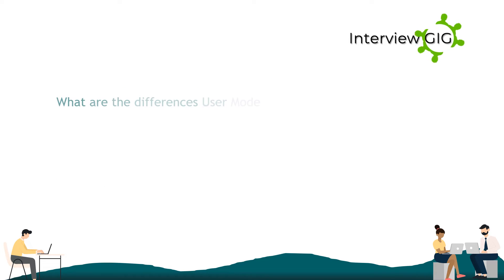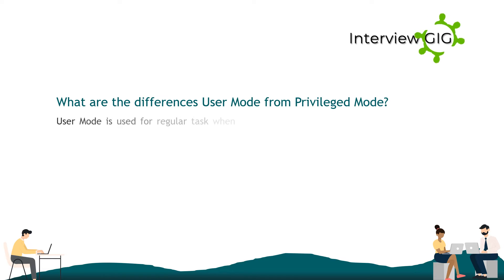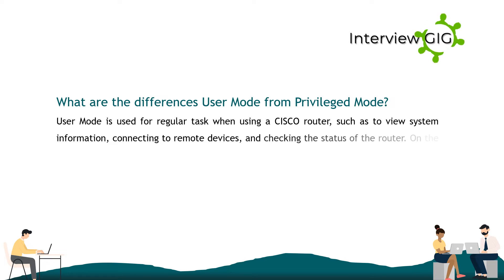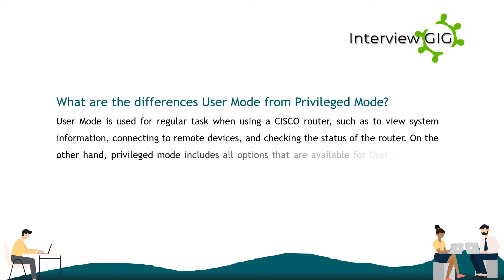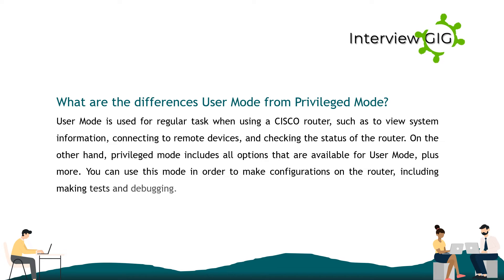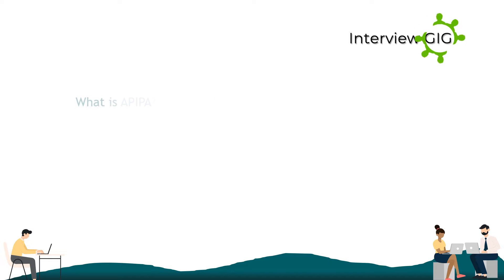What are the differences between user mode and privileged mode? User mode is used for regular tasks when using a Cisco router, such as viewing system information, connecting to remote devices, and checking the status of the router. Privileged mode includes all options available in user mode plus more — you can make configurations on the router, including making tests and debugging.